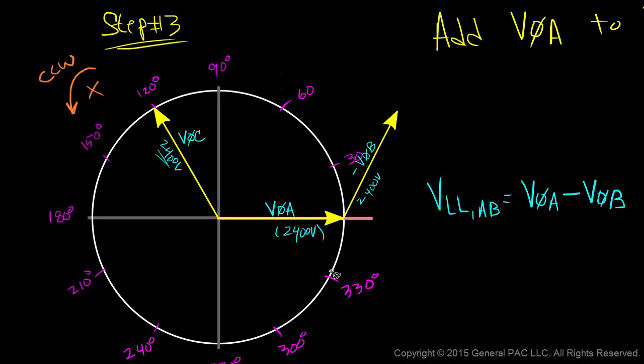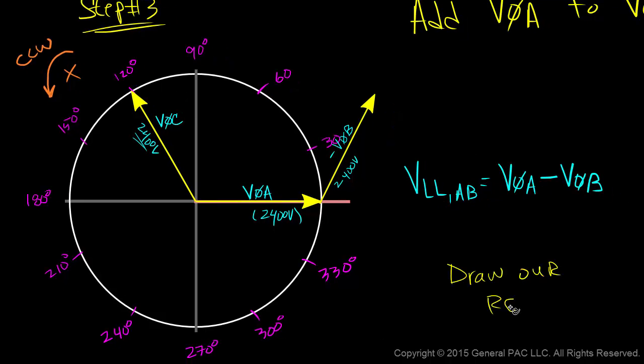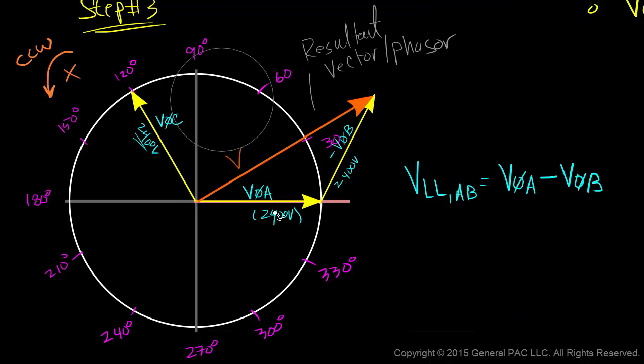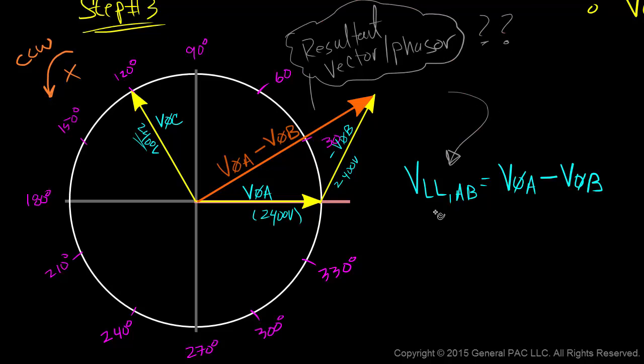Step number three. Okay, so in the third step, we're going to draw our resultant vector. We'll start at the origin and end over here. The resultant vector equals phase A voltage minus phase B voltage. Any idea what we should call this resultant vector? How about VLLAB? Remember our equation? The line-to-line voltage between line A and line B equals phase A voltage minus phase B voltage. The phasor diagram that we've drawn actually represents this particular equation.